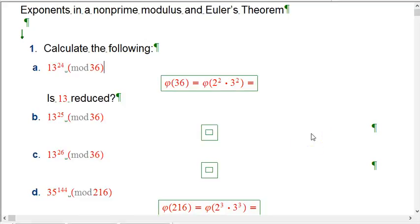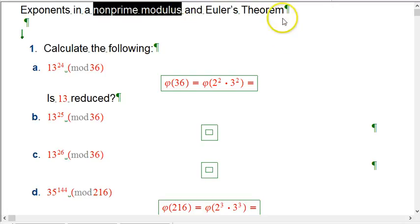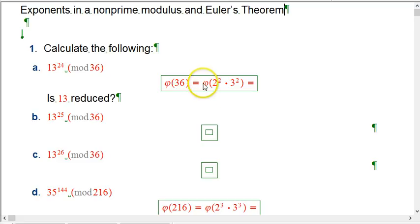Let's do some calculations of exponents in a not necessarily prime modulus and take advantage of Euler's theorem, the generalization of Fermat's little theorem, and whatever else we need to. We'll use rules of exponents, and in the second part of this video we'll do some repeated squaring to do some complicated exponents.